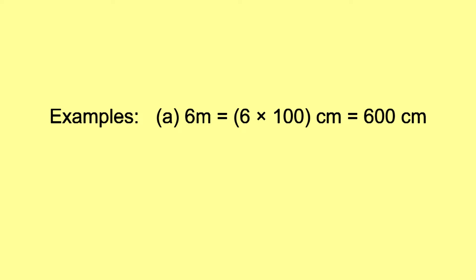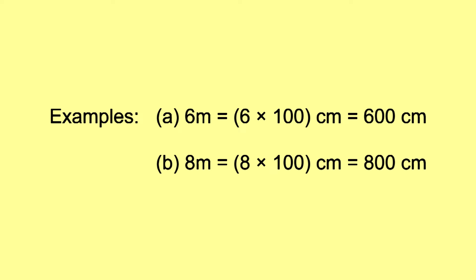Example: 6 meters is equal to 6 × 100 centimeters, which is equal to 600 centimeters. 8 meters is equal to 8 × 100 centimeters, which is equal to 800 centimeters.